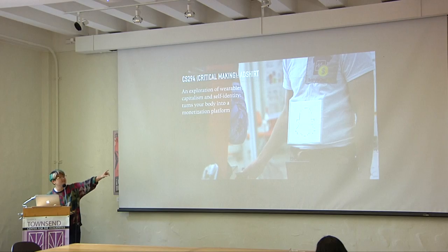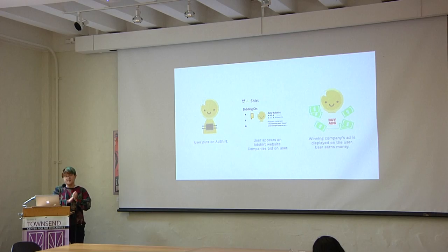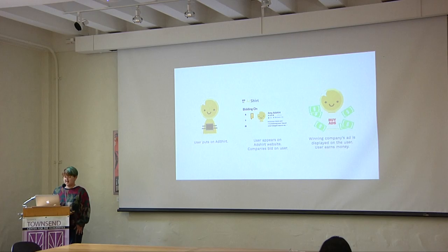Adshirt, as you can see, is this wearable LED matrix display, which effectively turns your body into a billboard and thus a monetization platform. The way Adshirt works is that someone who wants to make money will put on the Adshirt. Then companies can go to our website and make accounts and create their own advertisements and place bids for a specific user's Adshirt. Whoever has the highest bid will have their ad displayed on the user and in turn the user makes the money from the company.